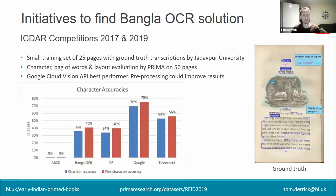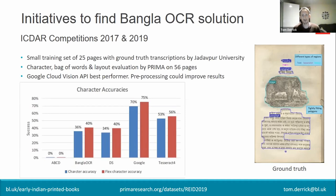With that in mind, we undertook a number of initiatives, beginning in earnest with the ICDAR competitions in 2017 and 2019 — ICDAR being the International Conference of Document Analysis and Recognition — where we invited institutions worldwide to compare different OCR methods working with our selection of Bengali books. We gave them a very small training set of 25 pages of ground truth transcriptions, i.e. perfect transcriptions created by our project partners at Jadavpur University in Kolkata. Each competition entrant then received a further 56 pages of untranscribed pages to run through their OCR systems, and the results were analyzed by the PRIMA research group based at the University of Salford near Manchester.